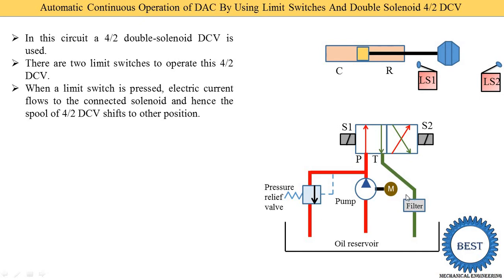In the return line we provide filters. Filters can be located in different ways — there is no fixed point. The A port and B port of the DCV are connected to the double acting cylinder by pipe connections. Port A is connected to the cap end port and port B is connected to the rod side port. Red color indicates high pressure and green color indicates low pressure or return lines.